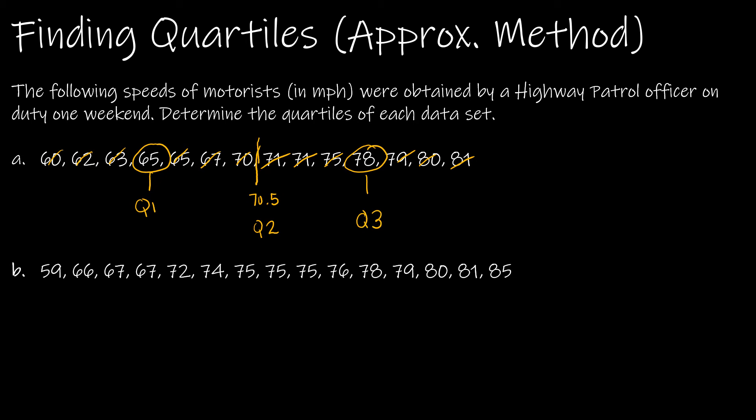It works the same when you have an odd number of values. It's important that these are ordered, so if they're not ordered, you have to order them first. If you end up with a Q2 or median that is one of your data values, you just don't use it on either side. So now I'm looking at this as one half of data. I count in from the outside to get 67, and from the other side to get 79. So that would be Q1 and Q3.